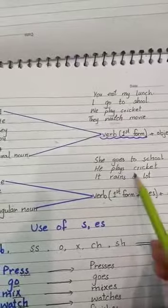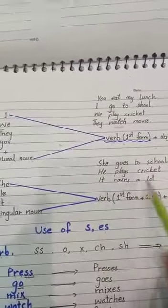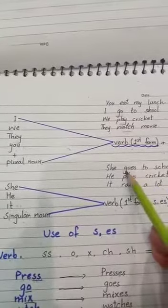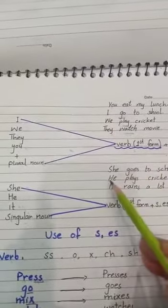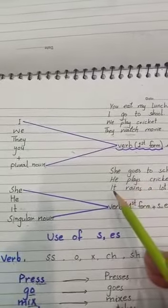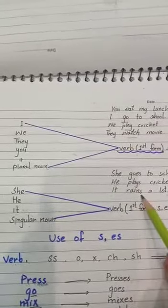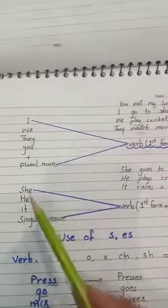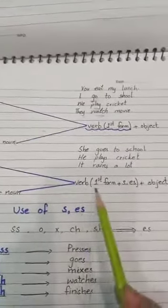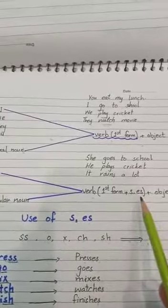So 'she goes to school', 'he plays cricket', 'it rains a lot'. See in these, with he, she, when 'go' comes, 'es' is added. With 'he', 'play' comes, so 's' is added to play. After this, it is 'it', so with 'rain' we have 'rains'. So with he, she, it, and any singular noun, with the first form, 's' or 'es' must be added.